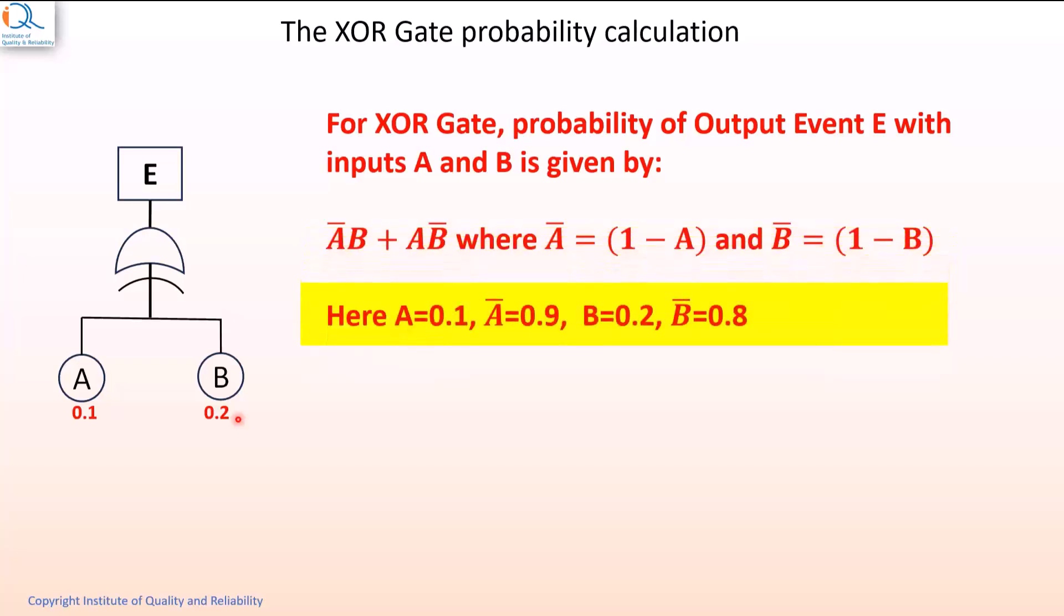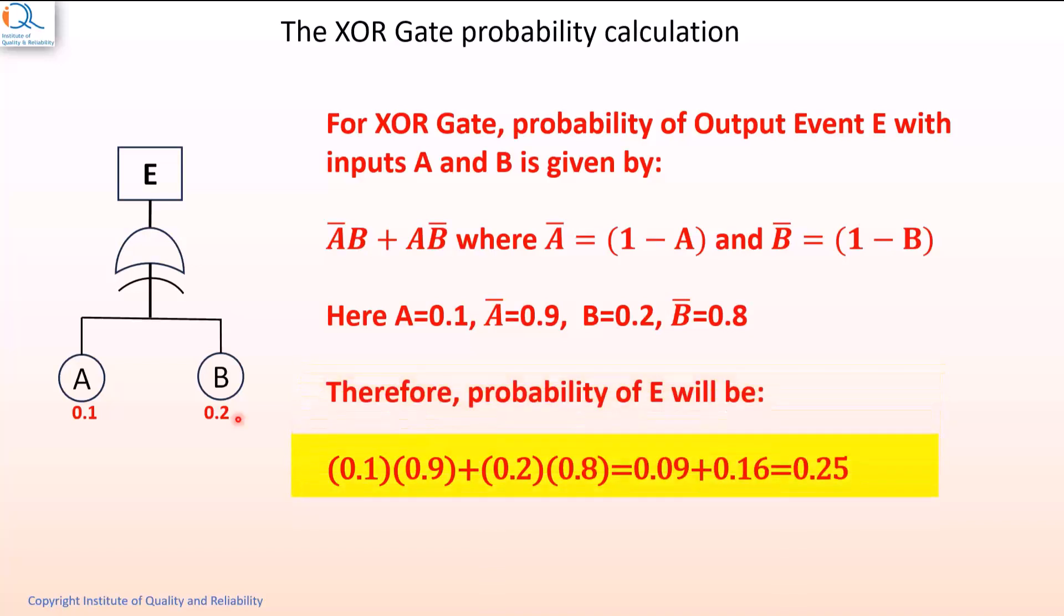Here A is equal to 0.1, A bar will be equal to 1 minus 0.1, that is 0.9. B is equal to 0.2, therefore B bar will be 1 minus 0.2, that is 0.8. Substituting these values in the above equation, we can get that the probability of E will be equal to 0.25.